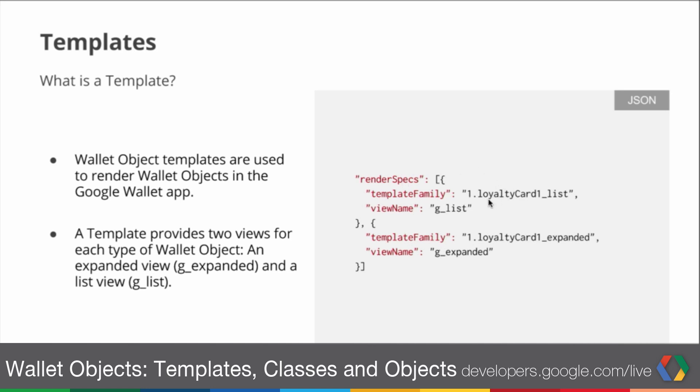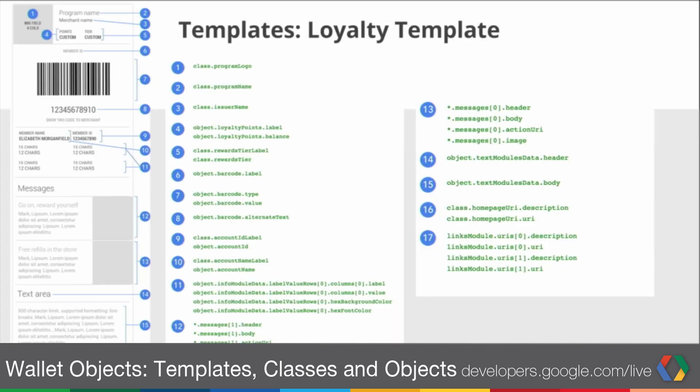There are two different views that we care about. The first one is a list view, where you see all of the objects that a user has stored. In this list view, we're defining to use the template LoyaltyCard1 list. The second view is the expanded view, which is when a user clicks into Wallet Objects to find the details. Here, for the expanded view, we've selected the LoyaltyCard1 expanded template.